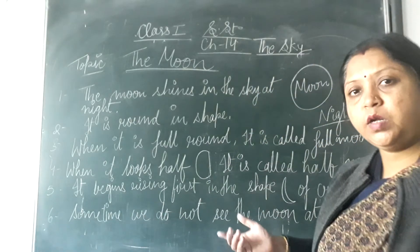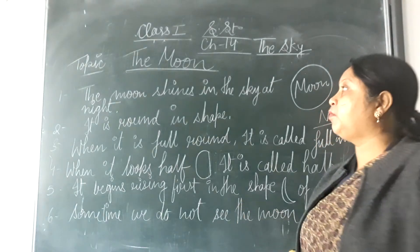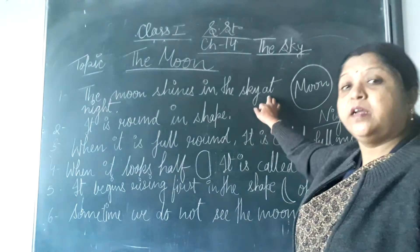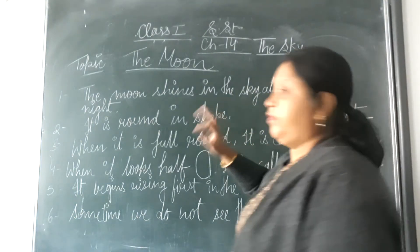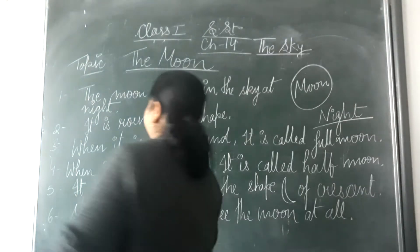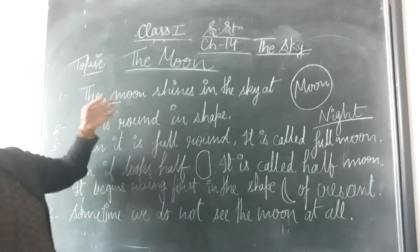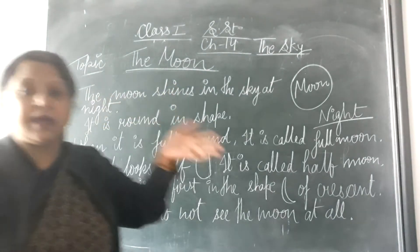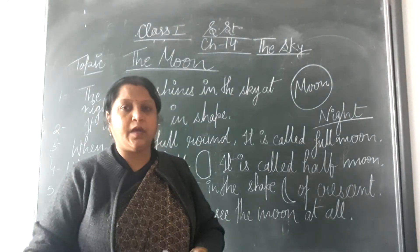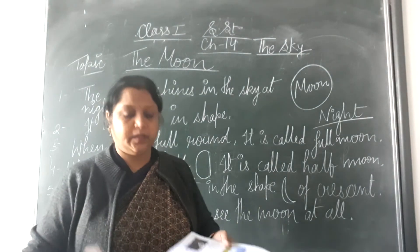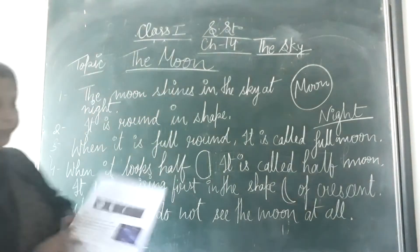When do we see the moon — does the moon shine in the sky during day or night? Night. Very good. The moon shines in the sky at night. Moon hamko aksar raat mein dikhta hai. But sometimes, kabhi kabhi humloh isko din mein bhi dekhte hain. Sometimes, not always.